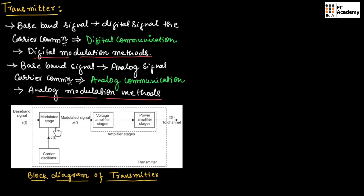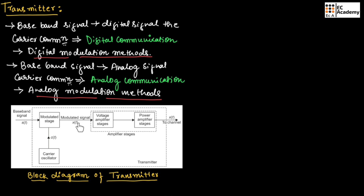This figure shows the block diagram of a typical transmitter. The baseband signal is applied to the modulation stage. This stage translates the baseband signal from the low frequency spectrum to the high frequency spectrum. It also receives the carrier signal C(t) generated by the carrier oscillator. In the modulation stage, modulation takes place with two input signals: the baseband signal and the carrier signal. After modulation, the output is known as the modulated signal, represented as X(t).